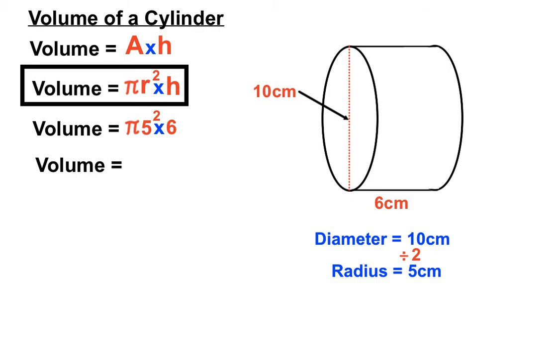And if we calculate that out, we get a number of 471.2. Now, we want to use cubic units. We were using centimetres before, but we want centimetres cubed now because we're using volume. Use cubic units for volume.